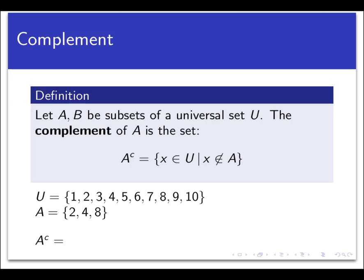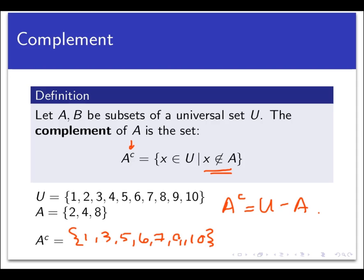Finally, let's look at the operation called the complement of a set. Unlike the other operations, this operation works on just one set at a time. Given a set A, we define A complement — using a little exponent C — to be the set of all elements in the universal set that are simply not in A. For example, if the universal set U is {1, 2, 3, ..., 10} and A is {2, 4, 8}, then A complement is {1, 3, 5, 6, 7, 9, 10}. Another way to say this is that A complement is the difference U minus A.